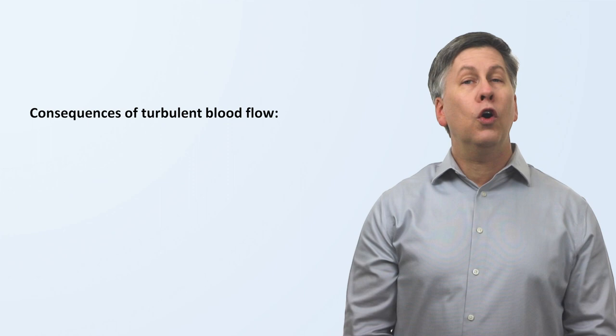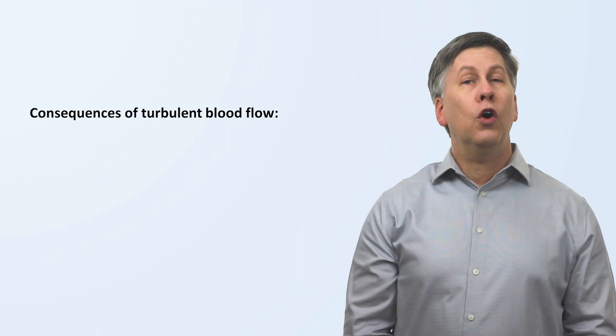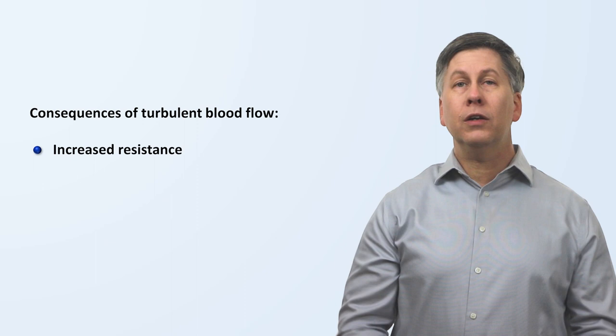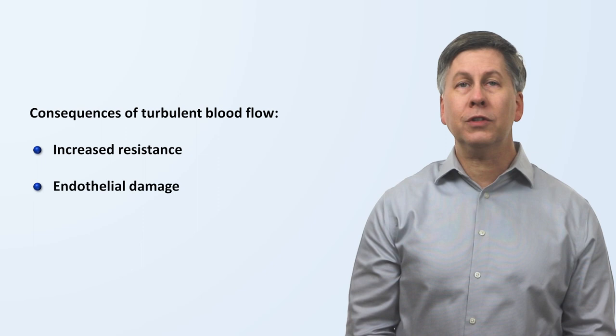Turbulence is relevant in cardiovascular physiology for a few reasons. One, as mentioned, turbulence creates more resistance to flow. Second, turbulence in pathologic locations damages the endothelial lining of blood vessels. And third, turbulent blood flow is responsible for creating the physical exam findings of heart murmurs.